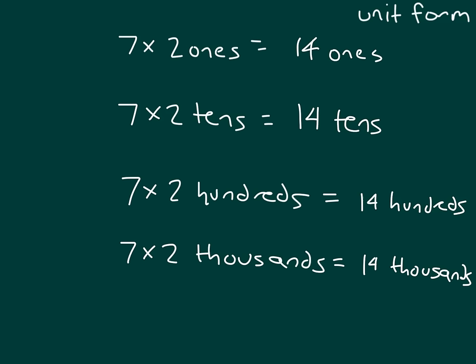What we could have done is we could have rewritten 7 times 2 ones as 7 times 2 times 1. 7 times 2 is 14, times 1 is 14 ones. And of course, we could have done something similar to these other problems as well.